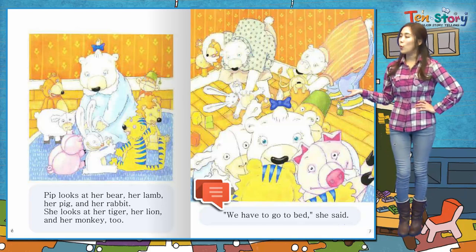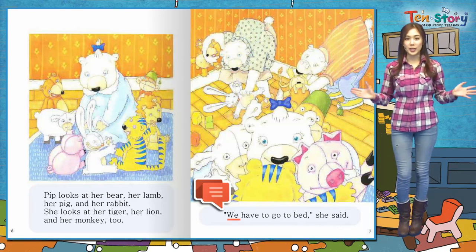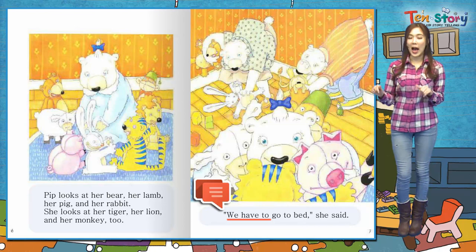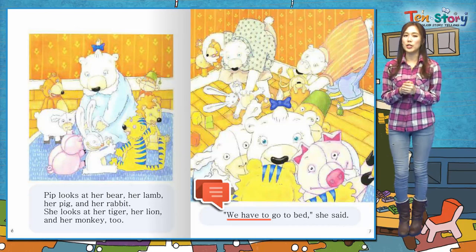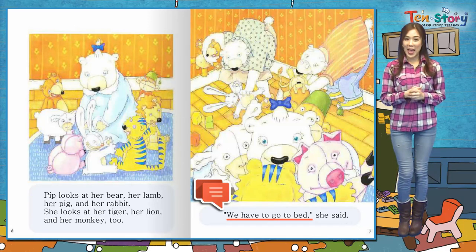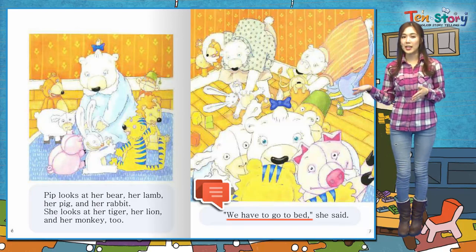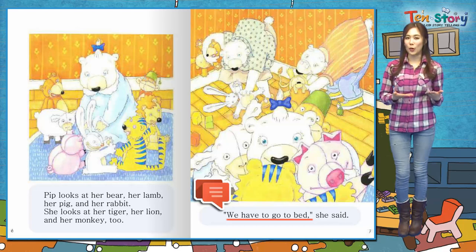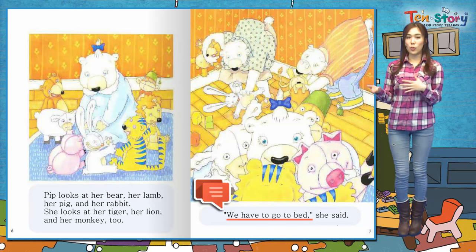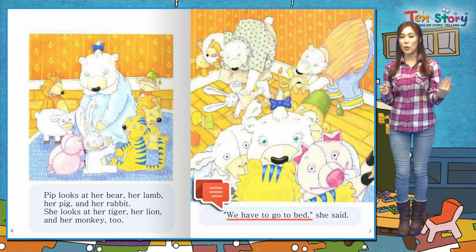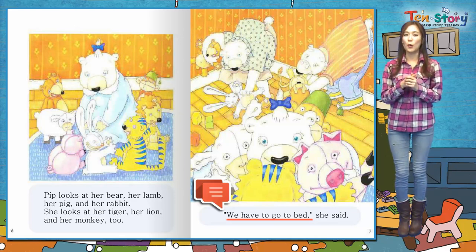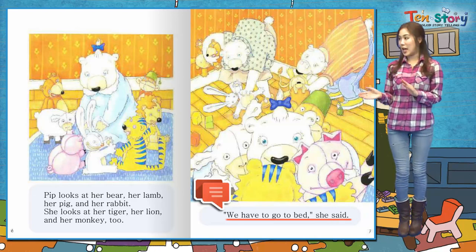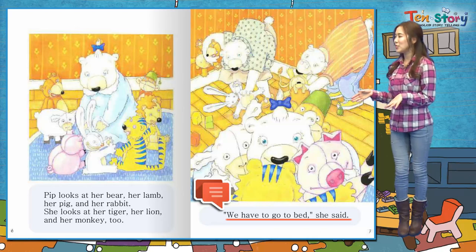그래서 PIP은 말했어요: We have to go to bed, she said. 우리는 have to 해야 해. 아까 배웠죠? I have to eat, I have to wash, I have to play. 근데 여기서는 우리는 해야 해. We have to go to bed. 어디로 가야 한대요? to bed, 침대로. 우리는 자러 가야 해, 라고 할 때 쓰는 표현이에요. 정말로 외국 사람한테 I have to go to bed 하면 지금 자러 가야 해요, 라고 알아들을 거예요. 하고 자기 친구들한테 이야기를 해주네요.